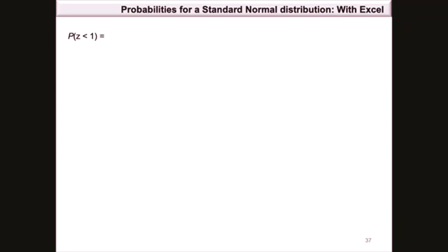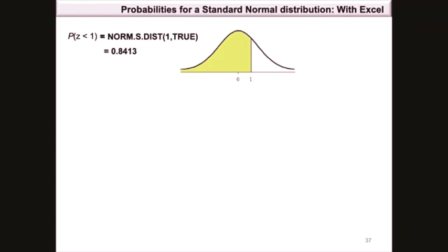To calculate the probability that z is less than 1, indicated on the graph as the shaded area to the left of 1, we use the norm.s.dist function. The formula is =norm.s.dist(1, TRUE), which equals 0.8413.